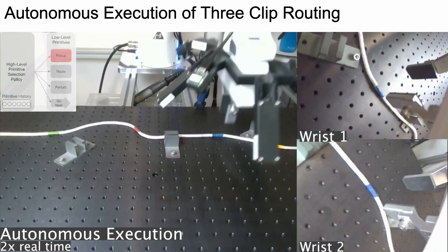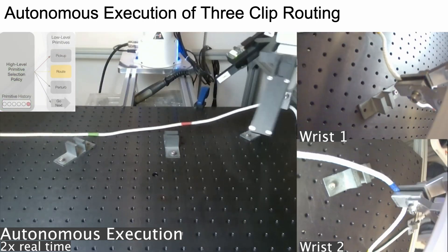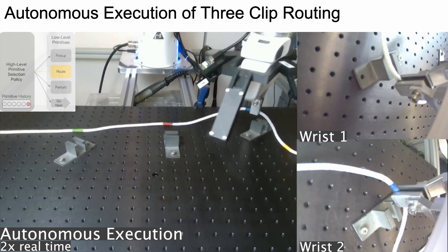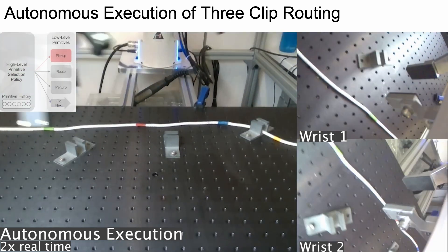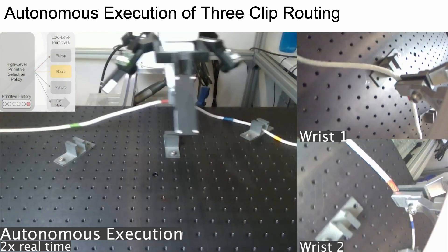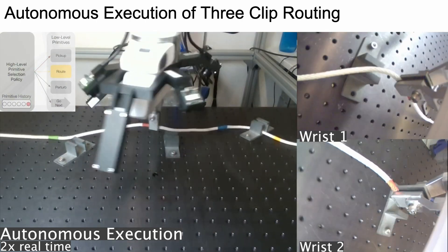Here is a video of a robot completing the three-clip cable routing task autonomously. The visualization in the top left corner depicts the high-level policy selecting a primitive to execute once the previous has completed.